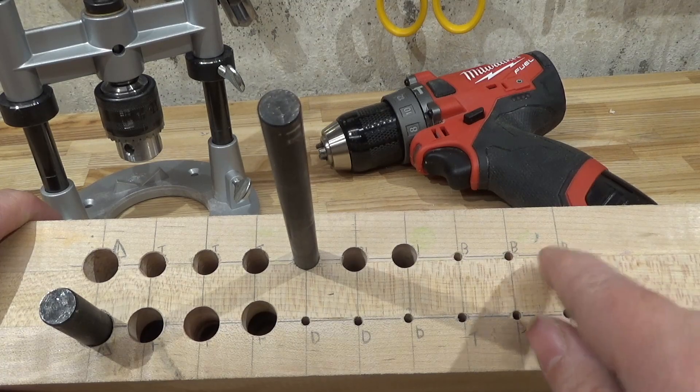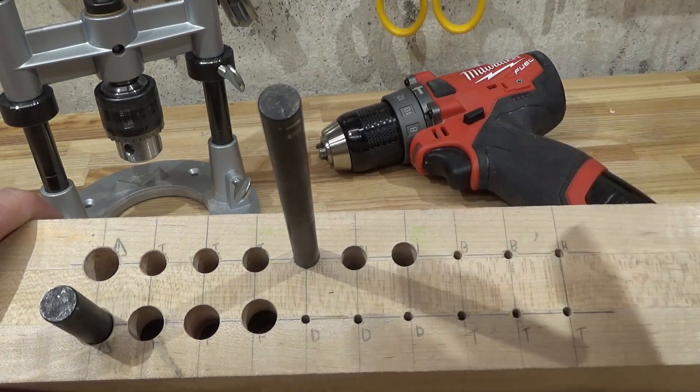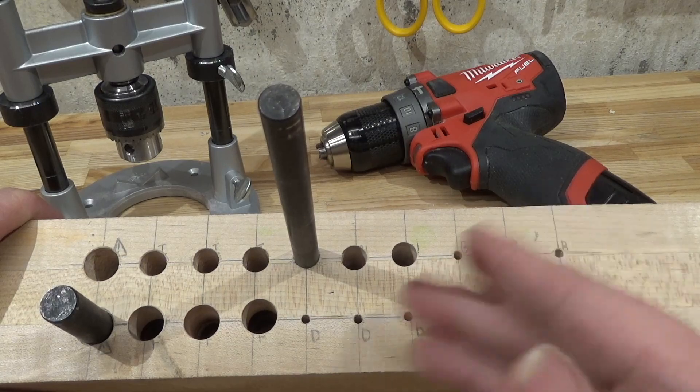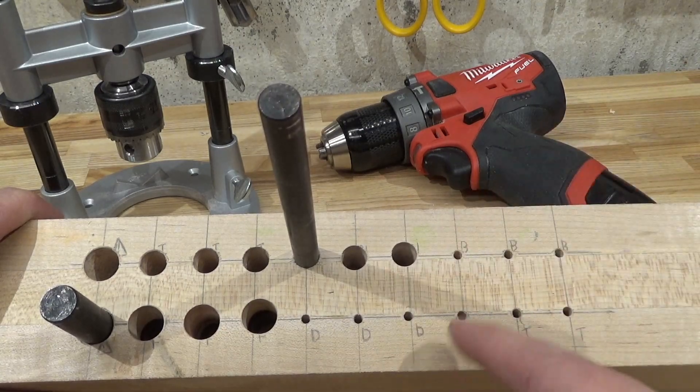These brad points are within a half a degree. The small twist bits, they also went in pretty well—a little bit more, but still an average of close to half a degree.